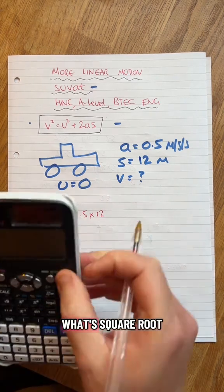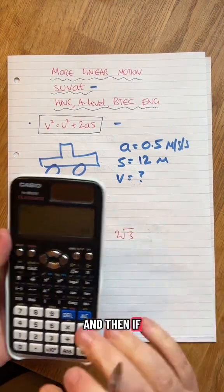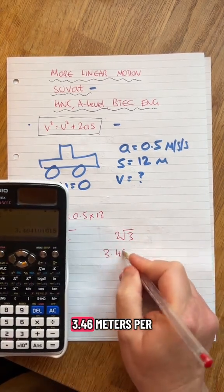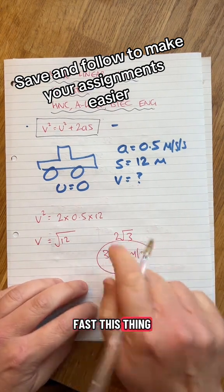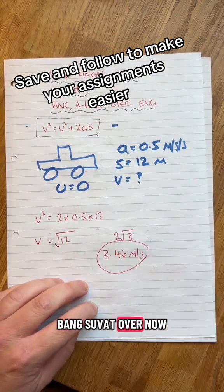So square root 12. If you want it properly, 3.46 meters per second. That's how fast this thing will be going after 12 meters at 0.5 acceleration. SUVAT over now.